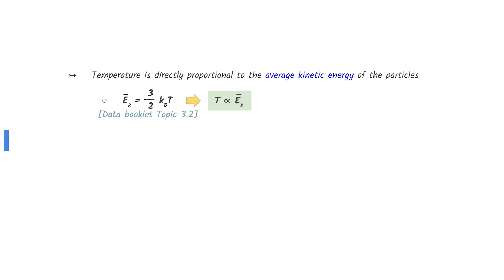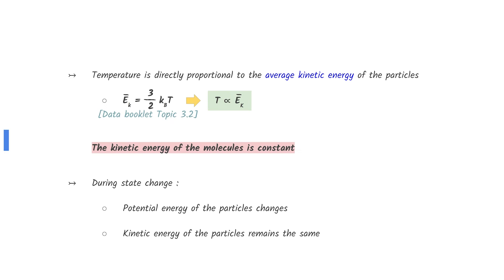Temperature does not change between section QR. Temperature is directly proportional to the average kinetic energy of the particles, as we know from the equation given in the data booklet. Therefore, we can conclude that the kinetic energy of the molecules is constant for section QR. Note that during state change, the potential energy of the particles changes, but the kinetic energy of the particles remains the same.